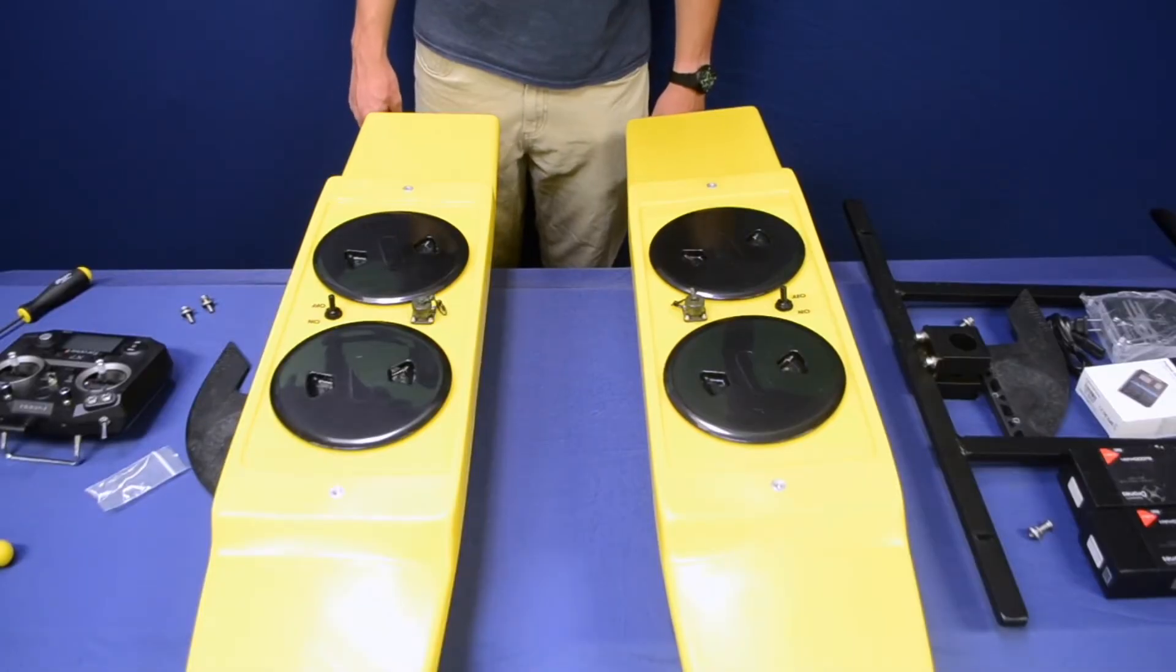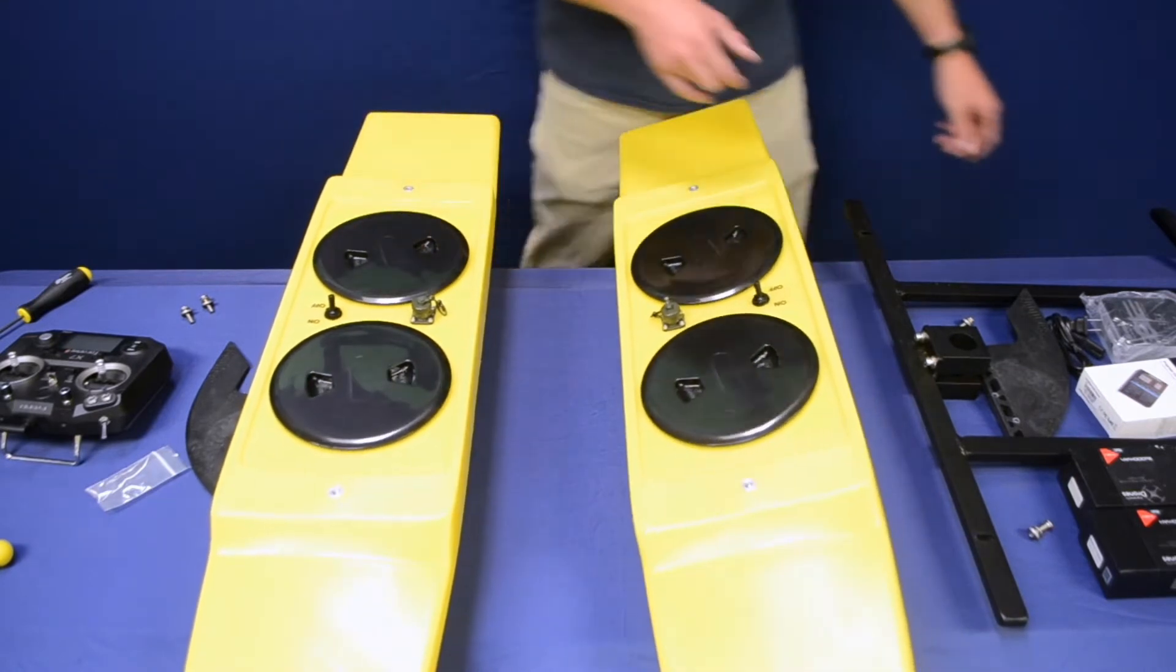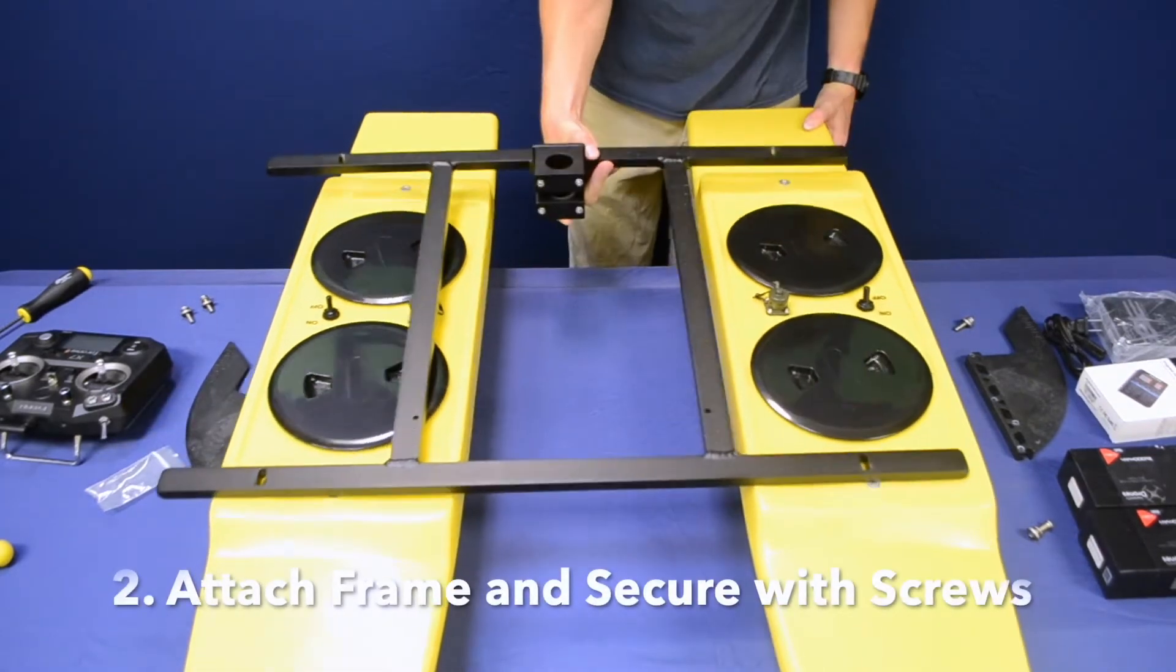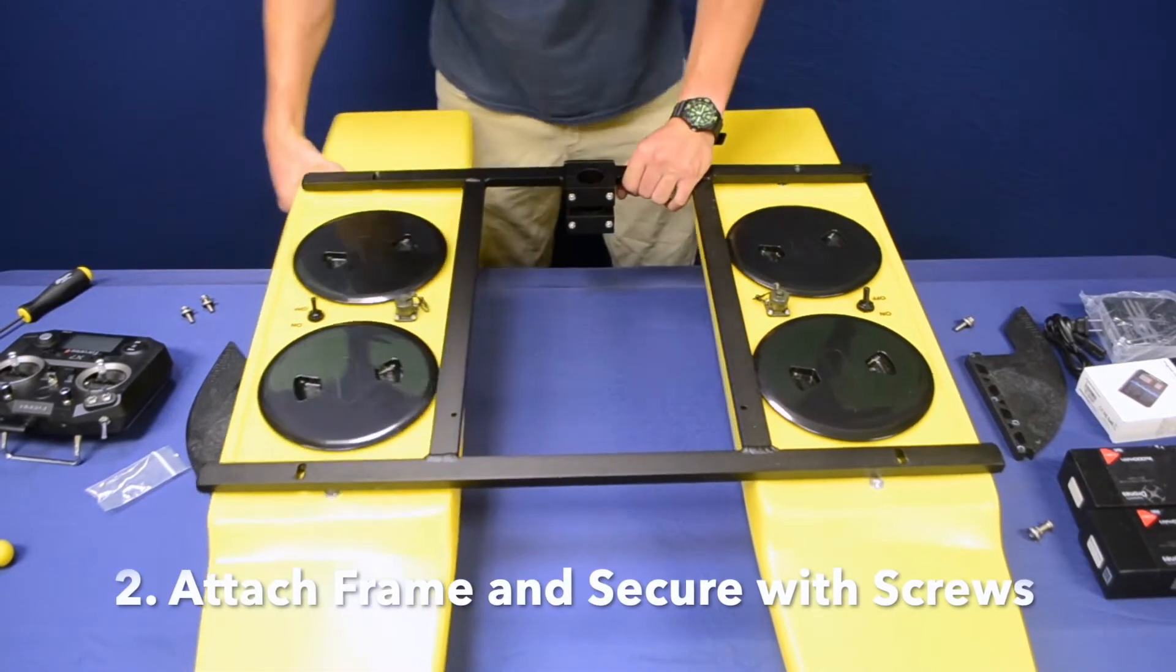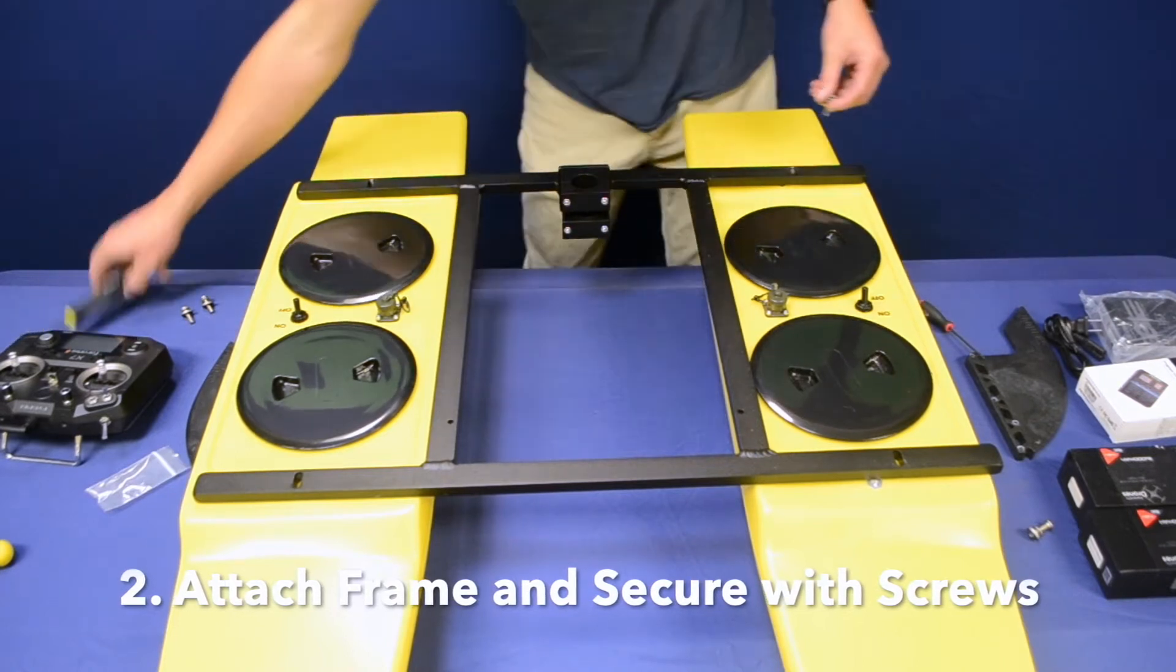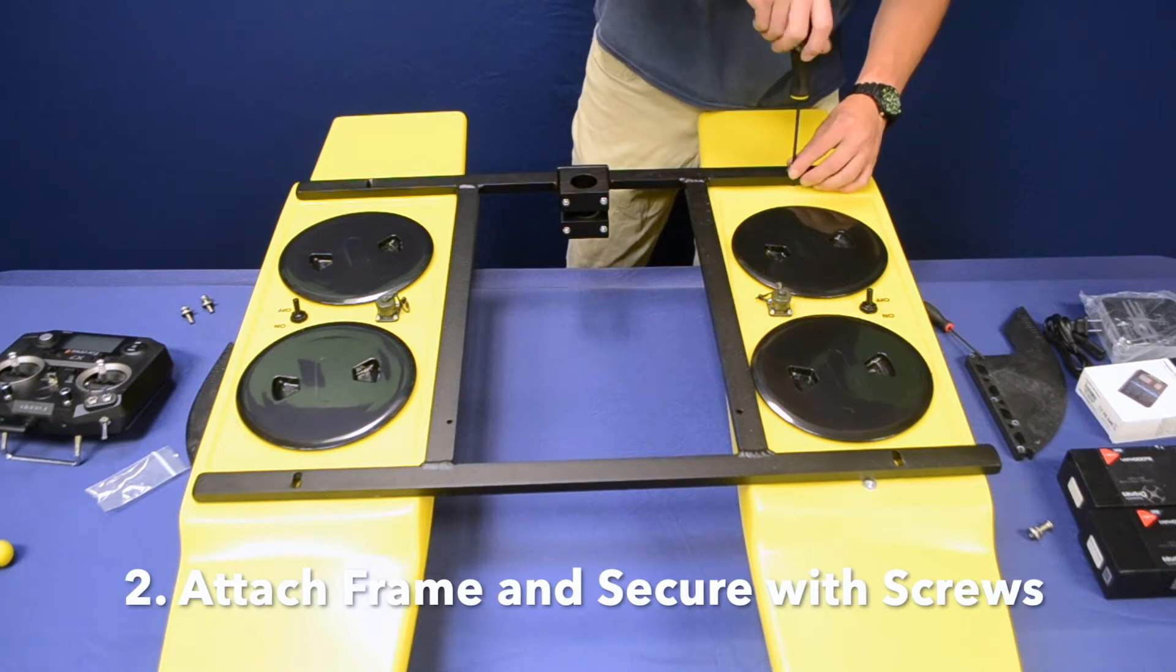Next, you're going to attach the frame. To do this, you'll use the frame, both pontoons, lay them out and get them spaced. It may take a little adjustment and you'll use the included hardware and Allen keys to attach all four bolts to the inserts in the frame and inserts in the pontoon.